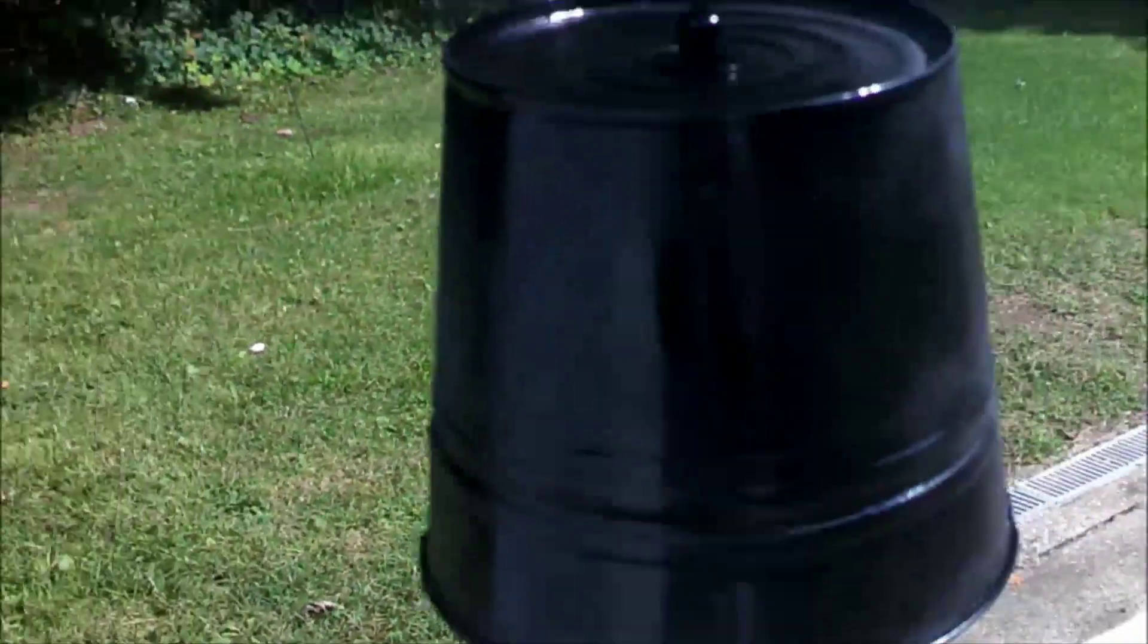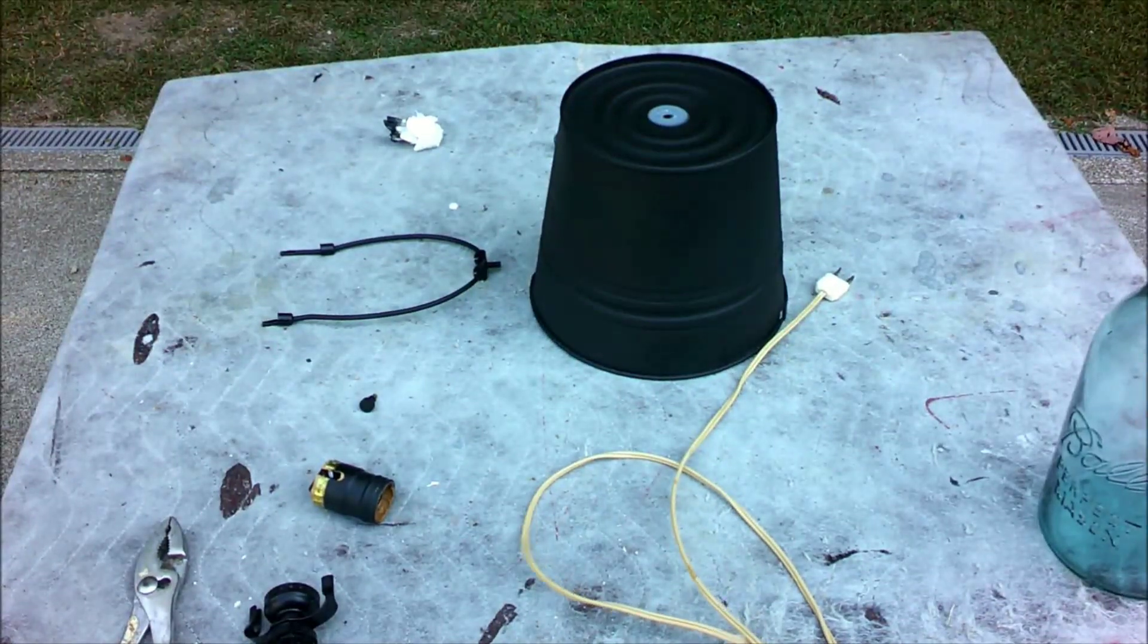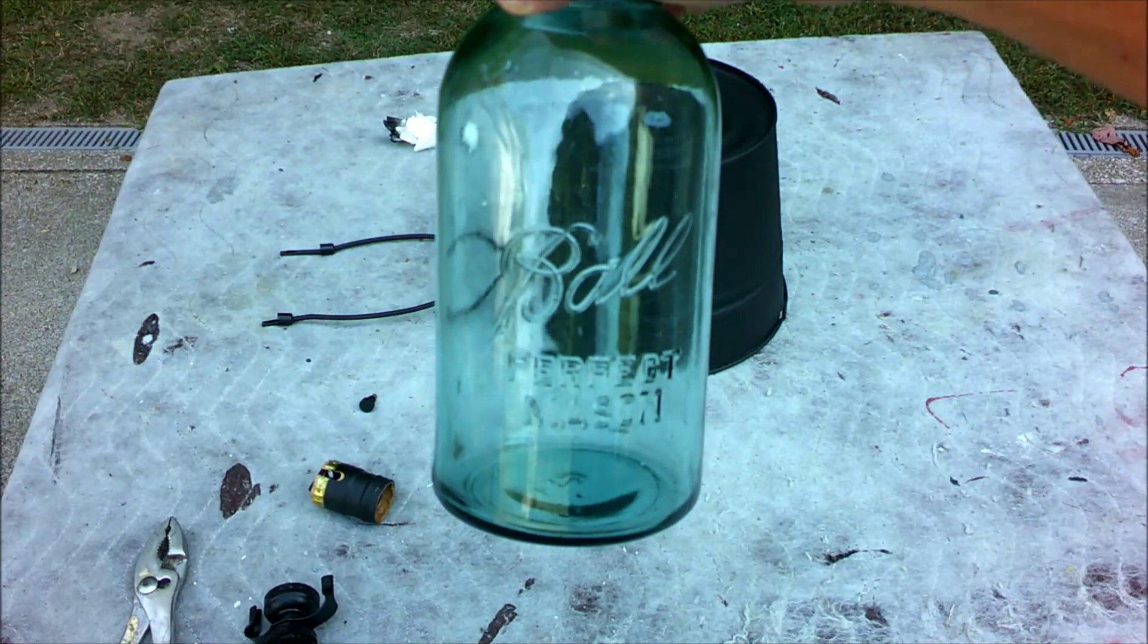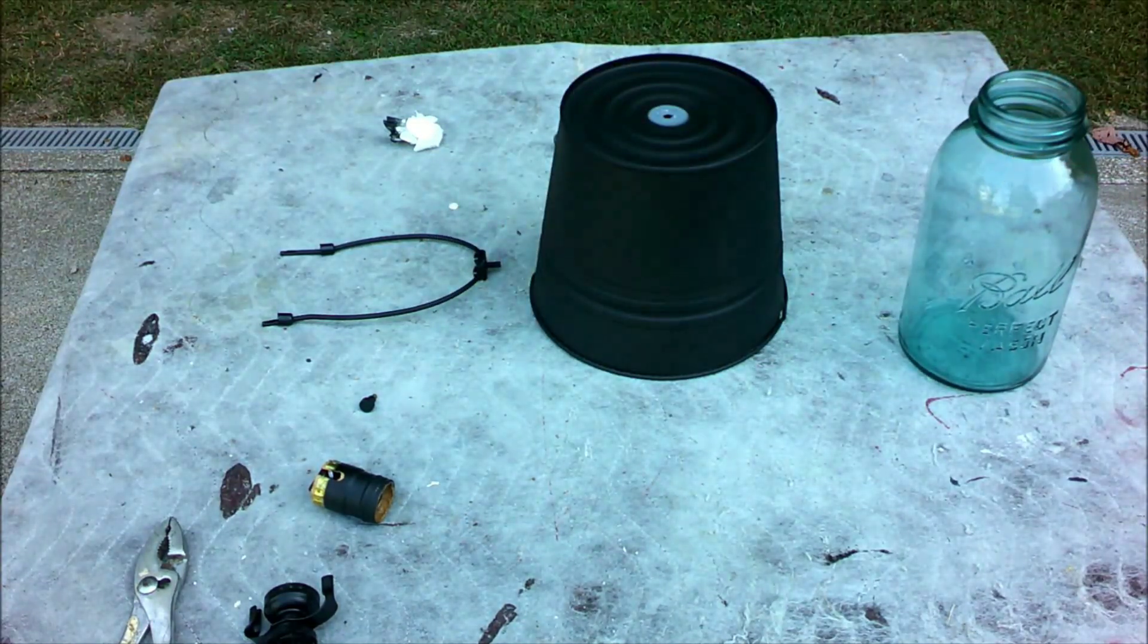Now we're going to go ahead and connect the electrical, but first you're going to have to drill a hole in the canning jar. I have a video coming up on how to drill into glass.